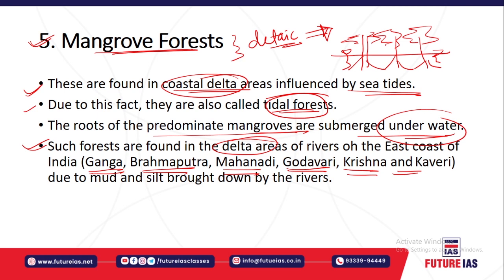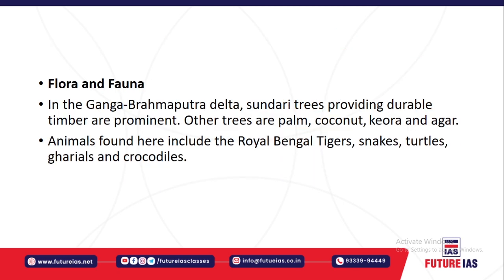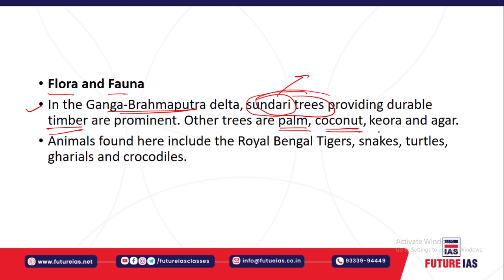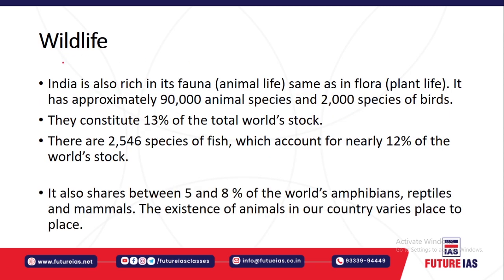Regarding flora and fauna: in the Ganga-Brahmaputra delta, you find mainly Sundri trees, and because of this the region is called Sundarbans. Sundri trees provide durable timber with tremendous industrial applications. Other trees found include palm, coconut, Keora, and Agar. Animals found are Royal Bengal tigers, snakes, turtles, gharials, and crocodiles.